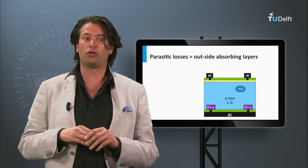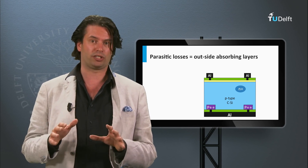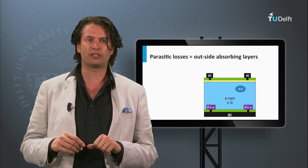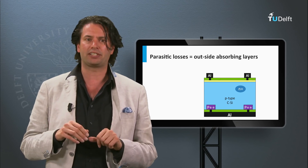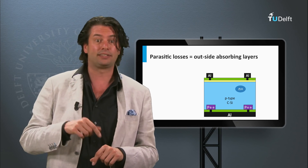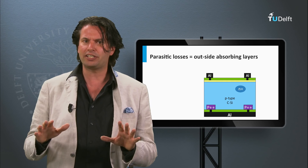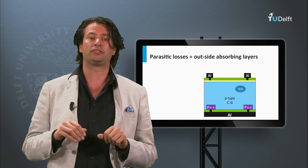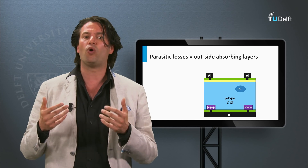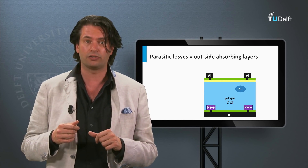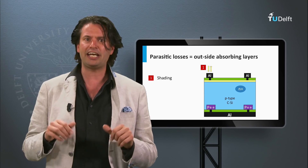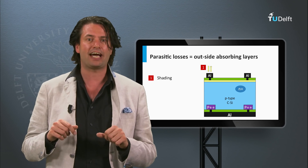Now we are going to look at some optical loss mechanisms. Let's consider a simple crystalline silicon solar cell. The example shown in this figure consists of a P-type crystalline silicon bulk with a thin N-type layer on top, referred to as the N-emitter. At the top and the back we have the metal contacts. Using this simplified solar cell configuration, we will demonstrate the various optical losses — which mechanisms prevent all light from being absorbed in the P-type crystalline silicon solar cell. First, we consider the metal contacts. These contacts shade a certain area, preventing light from being absorbed in the PV active layers.